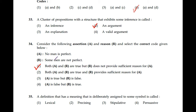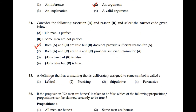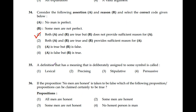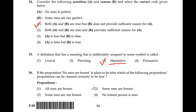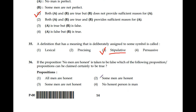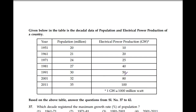Question number 35: A definition that has a meaning deliberately assigned to some symbol is called stipulative. Correct option is 3. Question number 36: If the proposition 'No men are honest' is taken to be false, which of the following propositions can certainly be claimed to be true? The correct answer is 2: 'Some men are honest.'